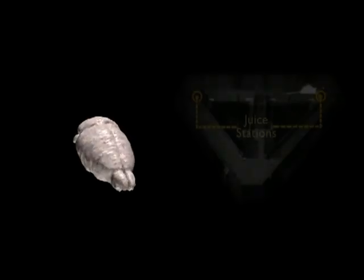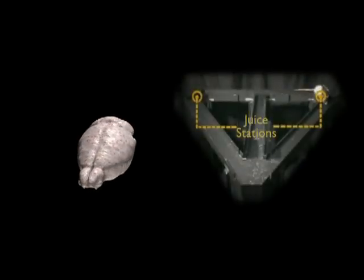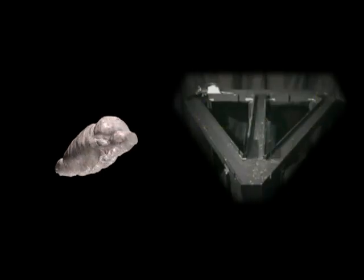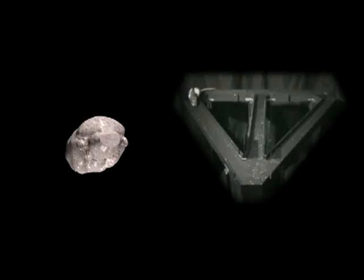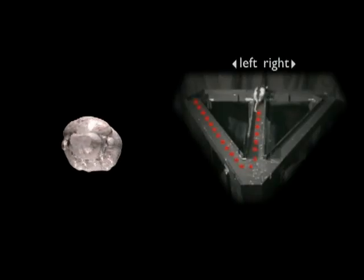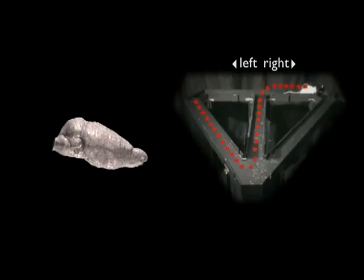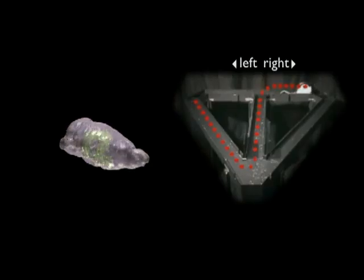Rats are good at remembering where things are and how to get them. Here the rat has learned how to find a tasty treat each time he walks around the triangular maze. But there's a catch. He has to turn in the maze in the opposite direction from the last try in order to get his treat. First left, then right, then left, then right.